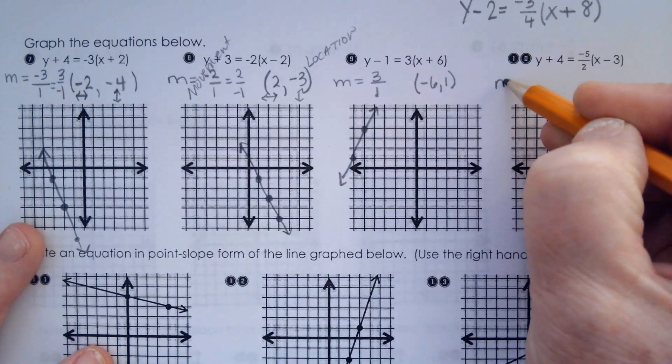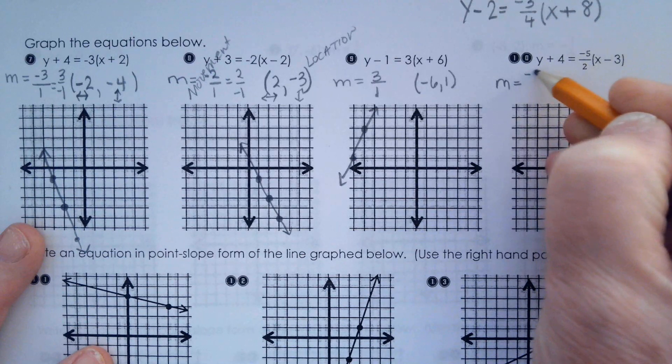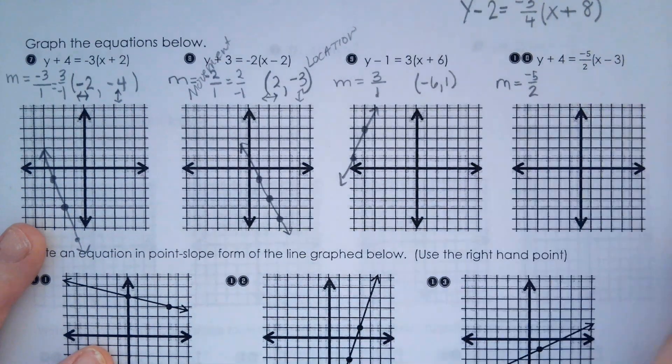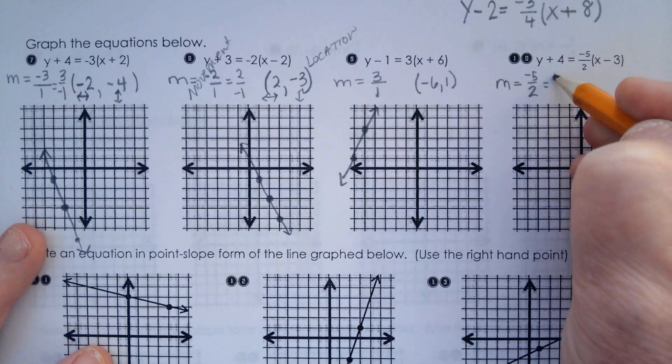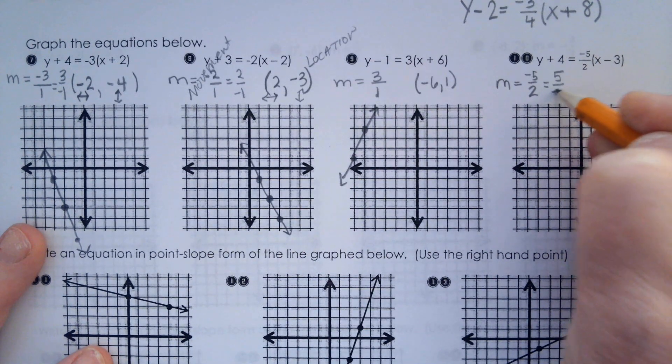What did you get for the slope here? Negative 5 over 2. If you put the negative in the other part of the fraction, what would it be? 5 over negative 2.